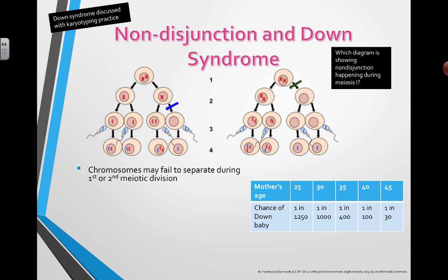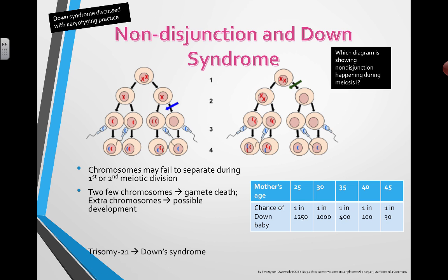It's called Trisomy 21, and this should be review for you. We need to link this into actual data and be able to look at how often Down syndrome actually happens. There's a strong correlation — you actually see a pattern going up with mother's age and the chance of having a Down syndrome baby.